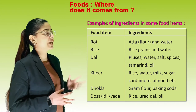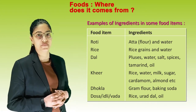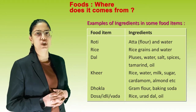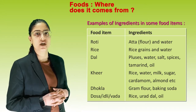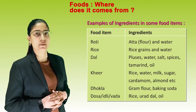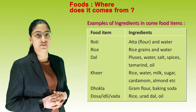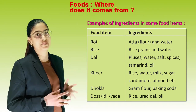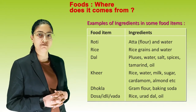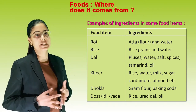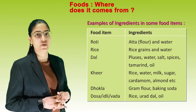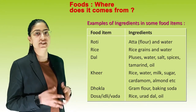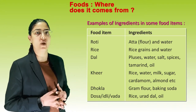Kheer - rice, water, milk, sugar, cardamom and almond, etc. Dhokla - gram flour and baking soda. Dosa, idli or vada - rice, urad dal and oil.